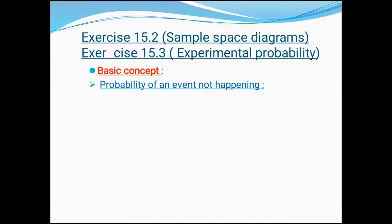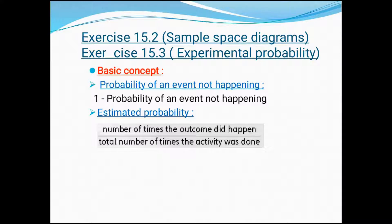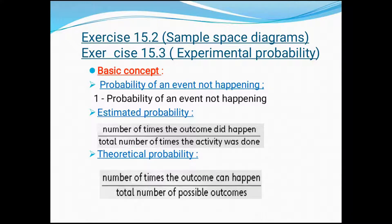Three basic formulas we have to learn. The first one: probability of an event not happening. We always have to subtract from one, because certainty is always one. So it's one minus probability of the event not happening. The next one is estimated probability. The formula is: number of times the outcome did happen divided by total number of times the activity happened. The second one is theoretical probability: it's number of times the outcome can happen divided by the total number of possible outcomes.